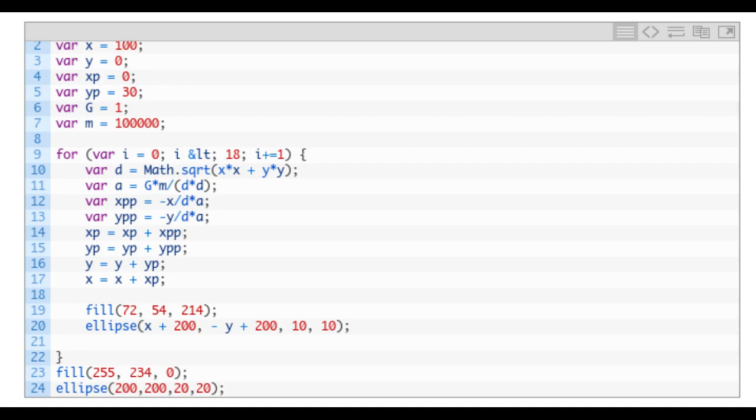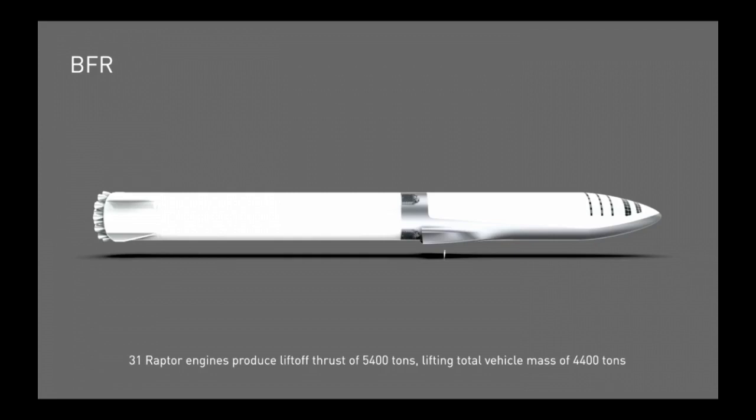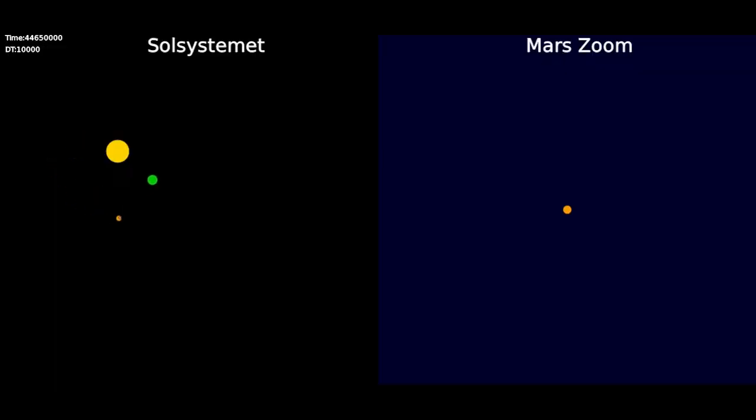But what can you use these differential equations for? Well if you have one of these rockets you probably want to know how much time it takes to fly to Mars. With the help of a differential equation we can find out that it takes around 8 million seconds or just 3 months.